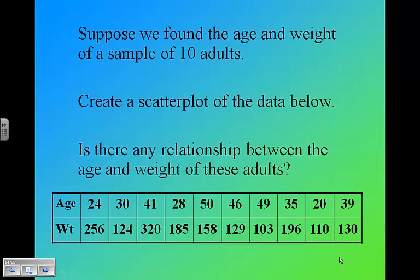A typical example question that you might have to do on a quiz or test is I might give you a set of data like this one. We have the age and the weight of a sample of 10 adults, and you want to create a scatter plot of the data below. Is there any relationship between the age and the weight of these adults? Looking at this set of data, you want to figure out which one is the x value and which one's the y, which one's the explanatory. Does age explain weight or does weight explain age?